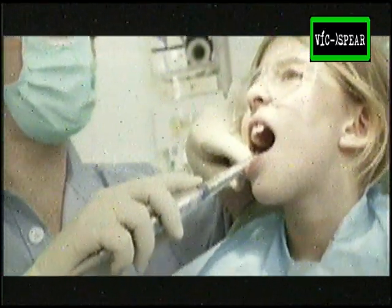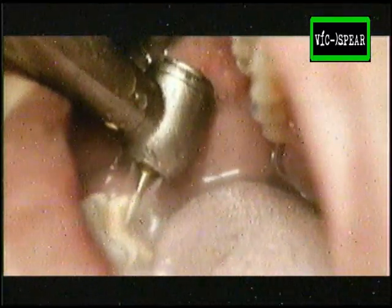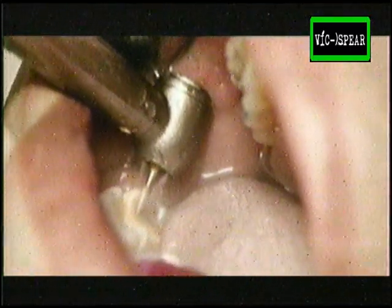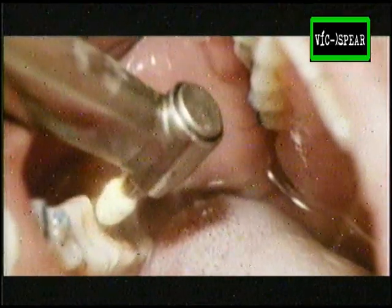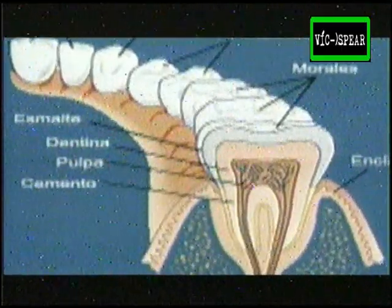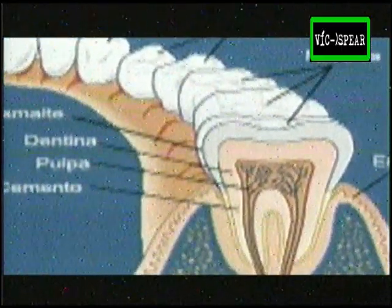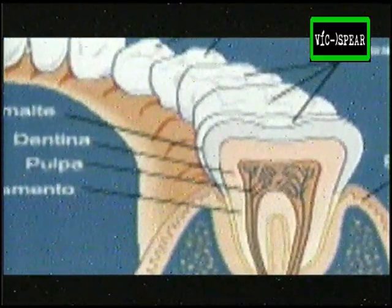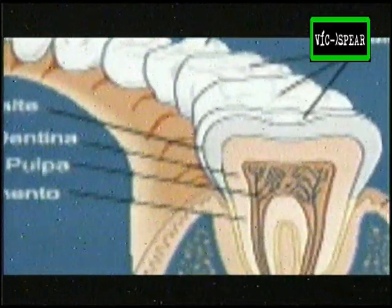En los controles periódicos se hace todo el proceso de limpieza, remoción de cálculo, remoción de placa, y además se hacen las aplicaciones tópicas de flúor. El flúor es un elemento que se aplica tópicamente a nivel del diente y que, a través de ciertos intercambios de iones, refuerza el esmalte, que es el tejido más superficial del diente y el que normalmente es primero atacado por la caries dental.